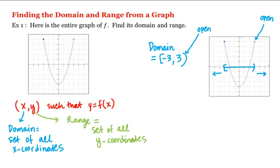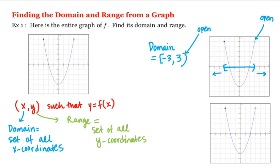Now what about the range? What is the set of all possible y-coordinates of points on the graph? Let's look at our graph again. The set of all possible y-coordinates is this interval here. Think of projecting the graph onto the y-axis. So the range is this interval: negative 4 up to 5.